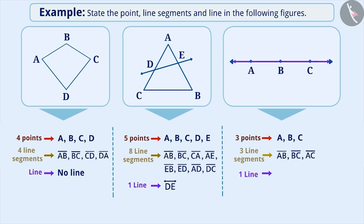Also, there is one line in this figure which can be named in different ways: Line AB, line BC or line AC.